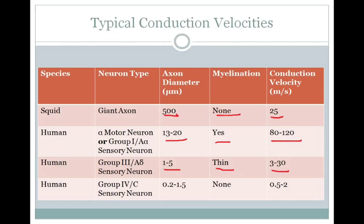As a last comparison, we can look at the group 4 or C sensory neuron fiber in humans: a very small axon diameter of 0.2 to 1.5 microns, no myelination, and conduction velocities on the order of 0.5 to 2 meters per second. As you can see, myelination can greatly decrease the axon diameters that you need and also allow you to increase or maintain your conduction velocity speed.